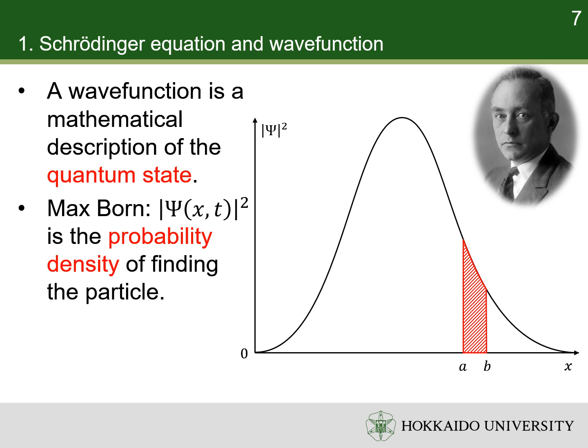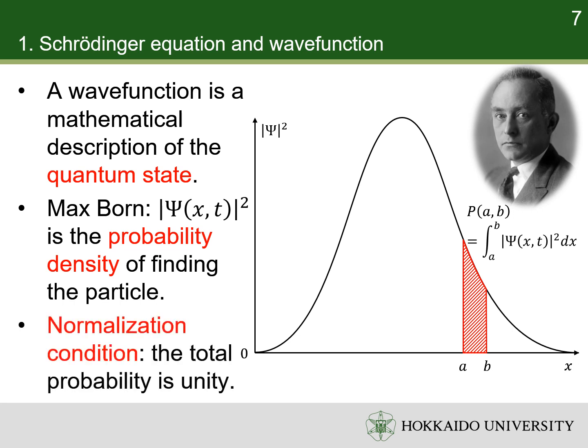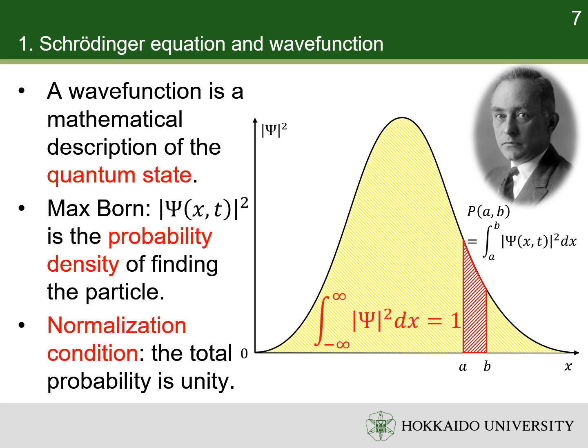The probability that its position will be in the interval between a and b is the integral of the probability density over this interval. This leads to the normalization condition, because if the particle is measured, there is 100% probability that it will be found somewhere.